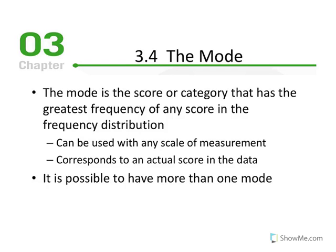Chapter 3 Measures of Central Tendency, Part 4: The Mode. The mode is a score or category that has the greatest frequency of any score in the frequency distribution.